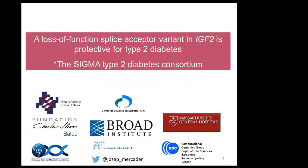I will start with the first paper. The first paper is titled 'Loss of Function Splice Acceptor Variant in IGF2 Protective for Type 2 Diabetes.' This is a very large effort and large consortium funded by the SLIM Initiative for Genomic and Health, conducted in Mexico in collaboration with the Massachusetts General Hospital. I was a visitor from the Barcelona Supercomputing Center when this project started, and I finished it as a Staff Scientist at the Broad Institute.